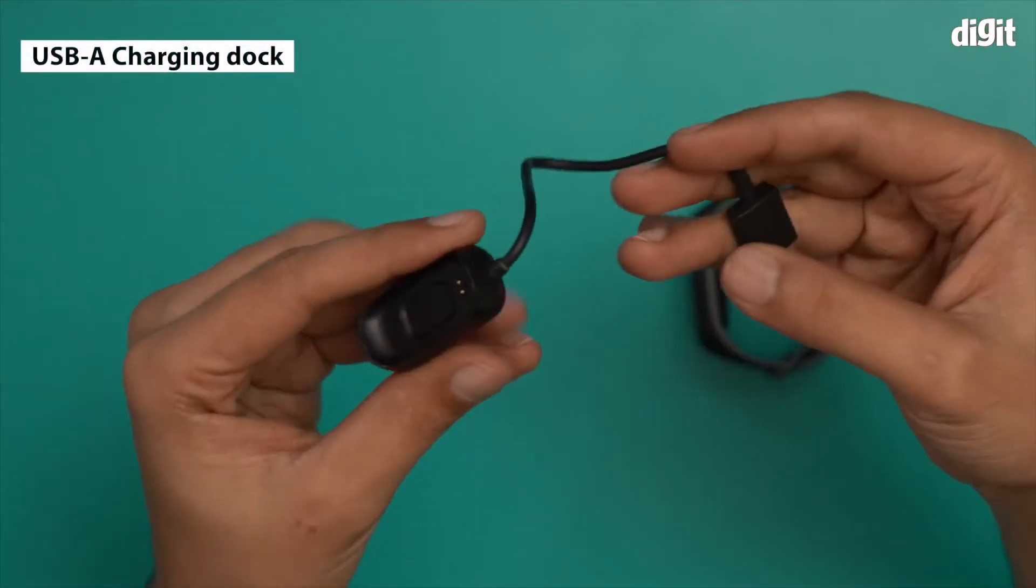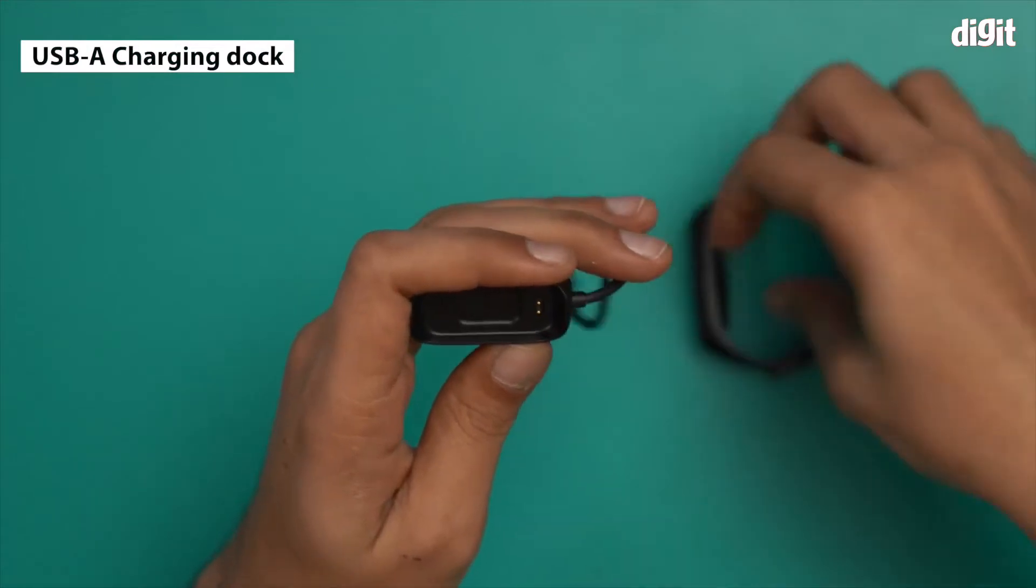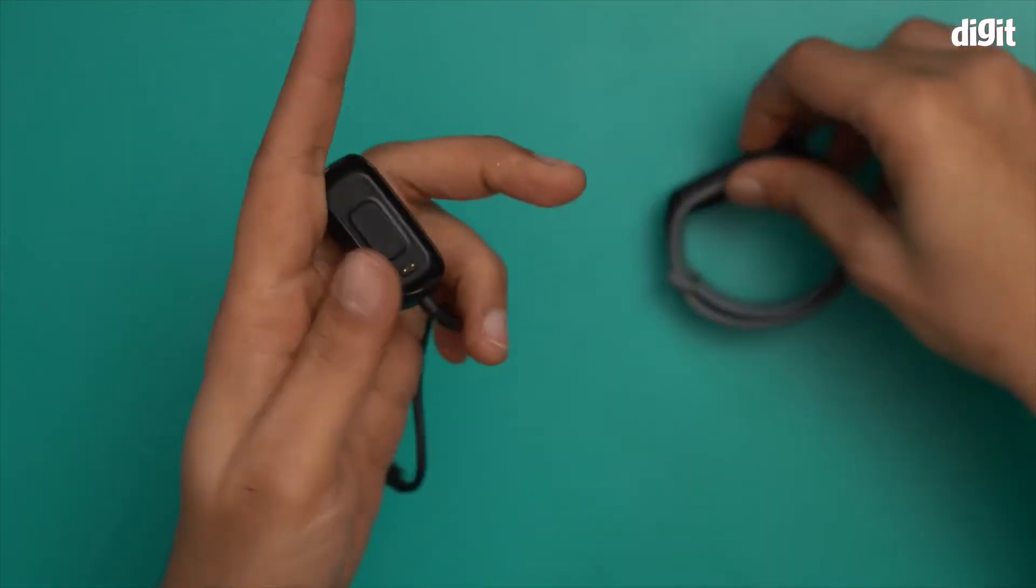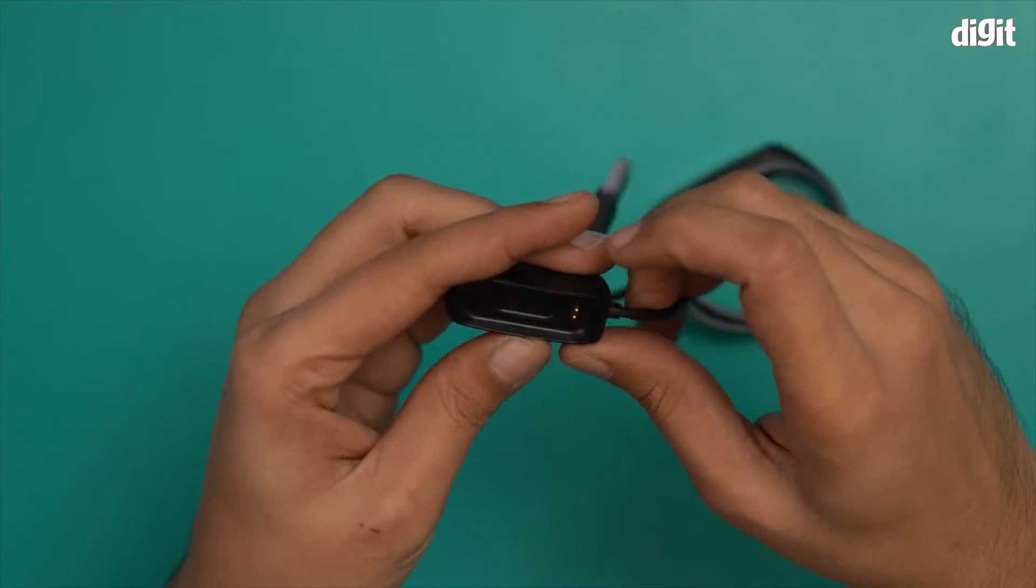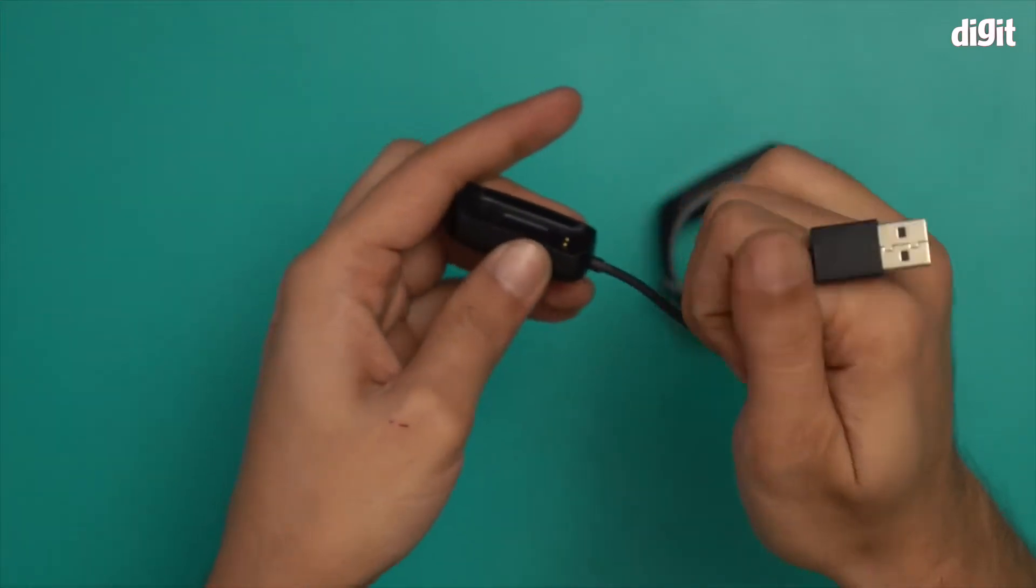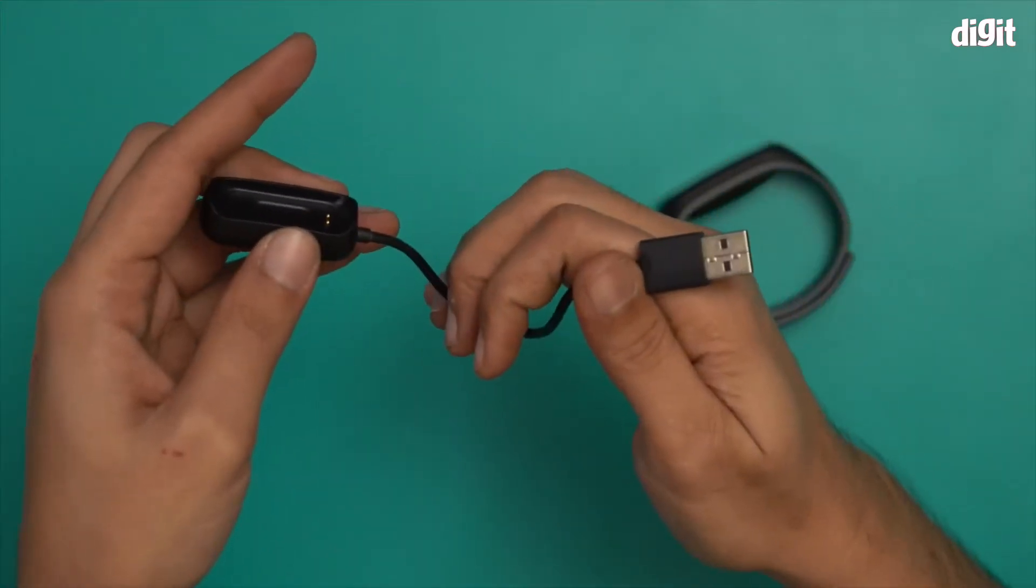This is the charging dock for this fitness band. The idea is that you take out the fitness tracker and put it over here to charge it. I will show you how it's done. There's a USB-A connector on one end.